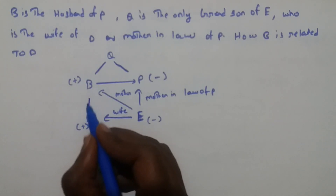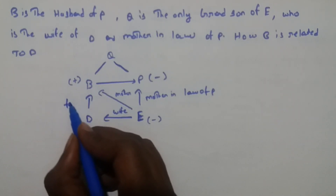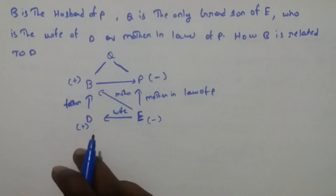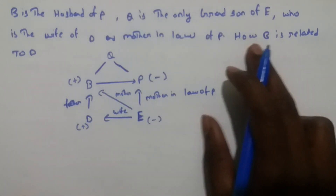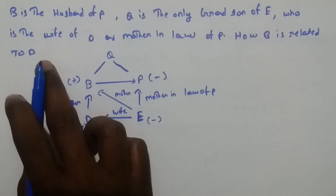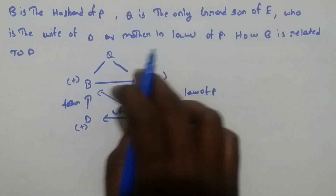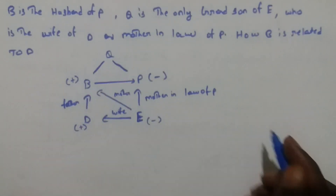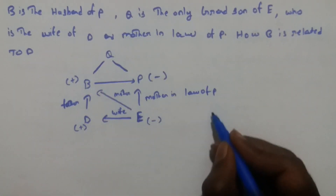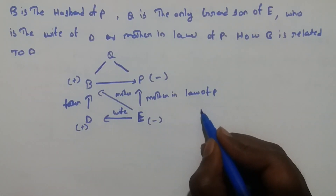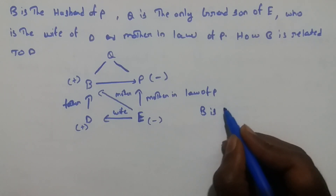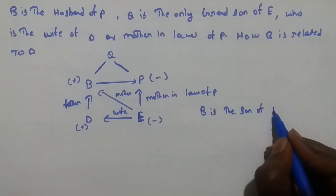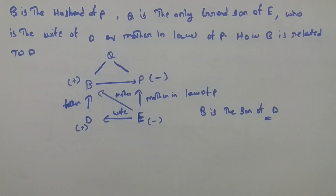So D becomes the father of B. The question is how B is related to D — the answer is B is the son of D.